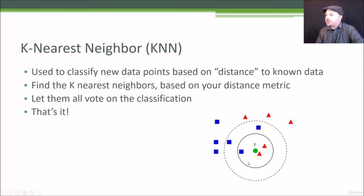Now if I were to expand this circle to include five nearest neighbors, K of five, I get a different answer. In that case I pick up three science fiction and two drama movies. If I let them all vote I would end up with a classification of science fiction instead. So you can see the choice of K can be very important.